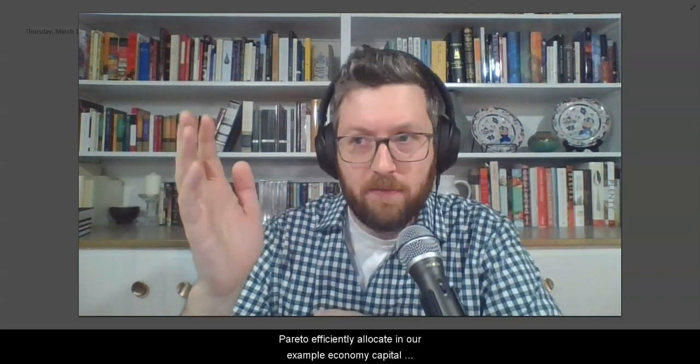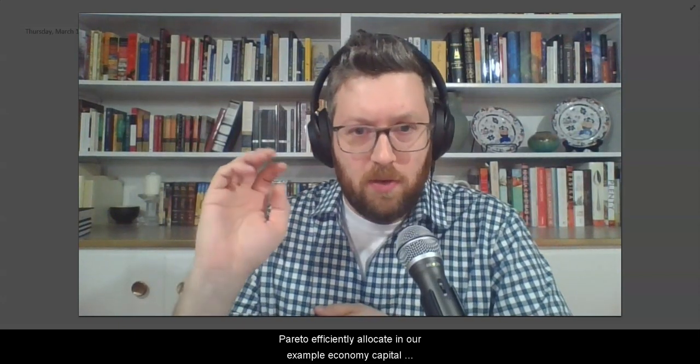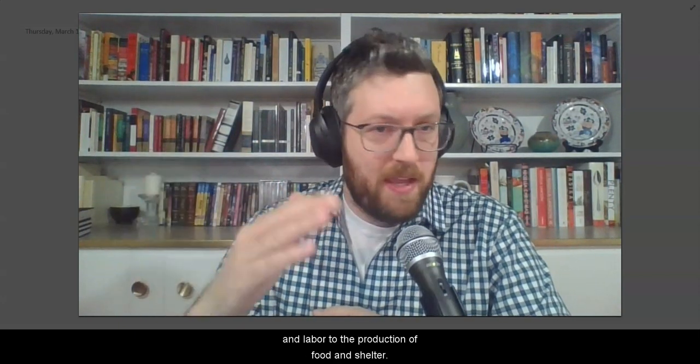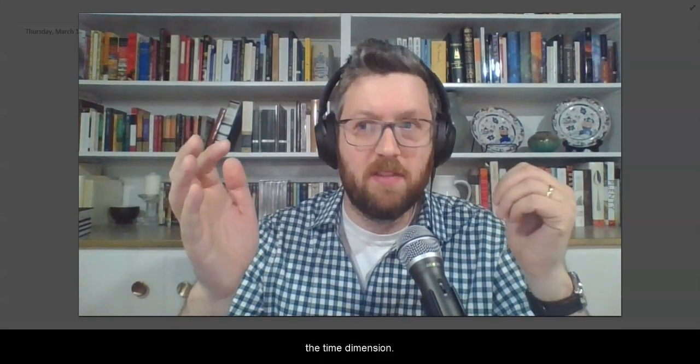Hey guys. So far we've talked a lot about how markets efficiently allocate resources. For example, we've talked about how it can at least Pareto efficiently allocate in our example economy capital and labor to the production of food and shelter. But the examples we've covered so far are missing a lot of crucial components of the economy. In particular, they miss uncertainty and they miss the time dimension.